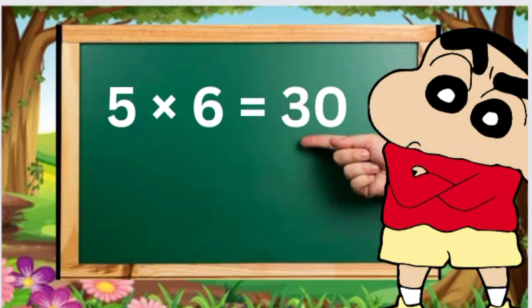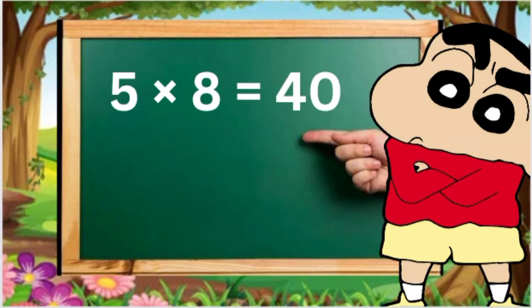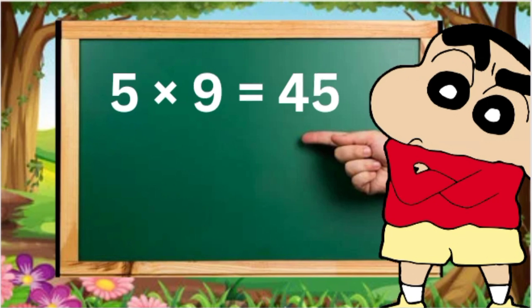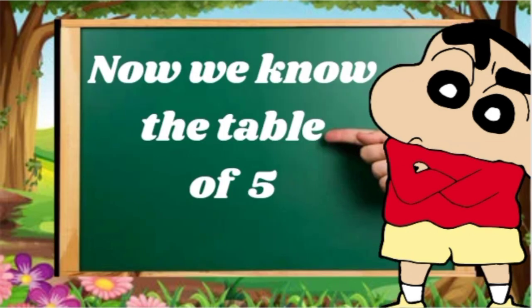5 6s are 30, 5 7s are 35, 5 8s are 40, 5 9s are 45, 5 10s are 50. Now we know the table of 5.